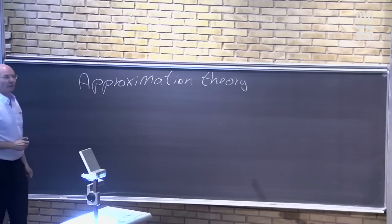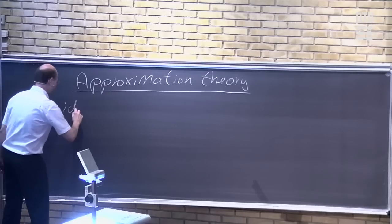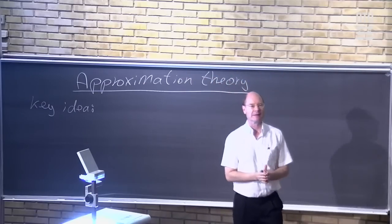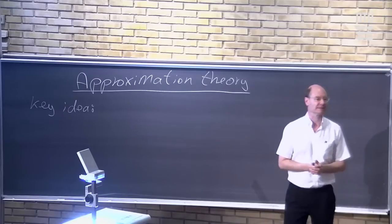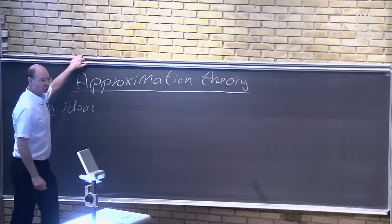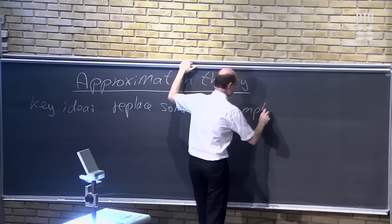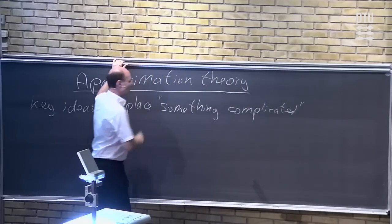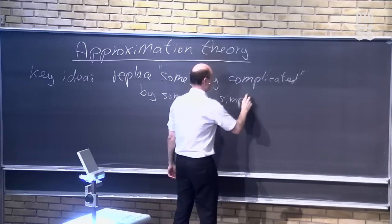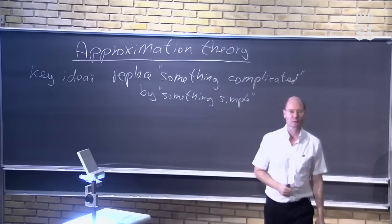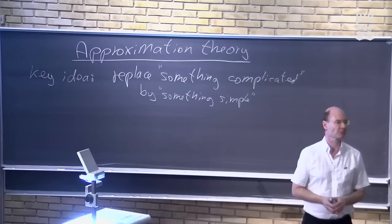You will find out very soon that we already know a lot about approximation theory. The key idea is that you have some phenomena described by something complicated, and you want to simplify that — you want to describe the same situation by means of something easier. We want to replace something complicated by something simple, but we must do that with great care. The simpler expression should give us the same information as the original, more complicated signal.